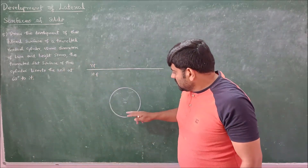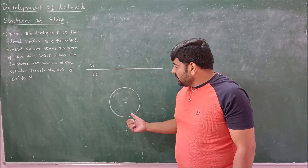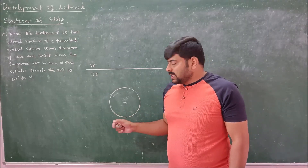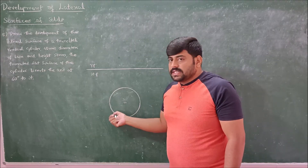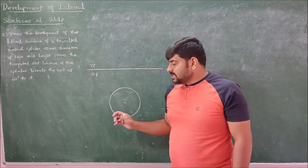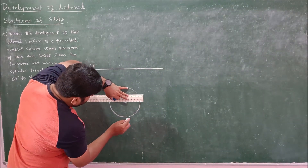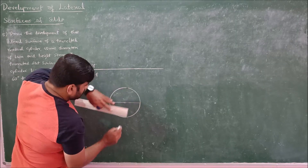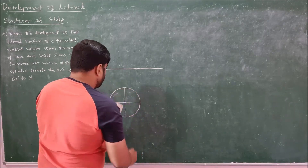For the development of this problem, I can divide the cylinder into 12 equal parts or 8 equal parts. Dividing into 8 equal parts will make the solution easier; 12 parts gives more accuracy. Dividing 360 degrees into 30 degrees each gives 12 sections; dividing into 45 degrees each gives 8 sections. I will go with 8 sections at 45 degrees.